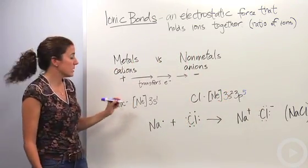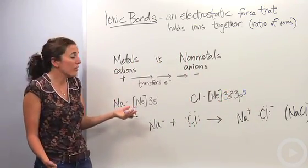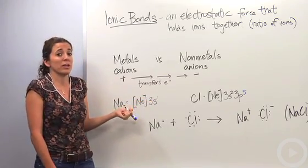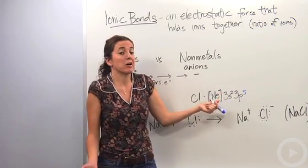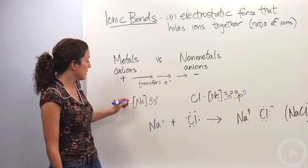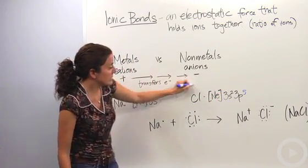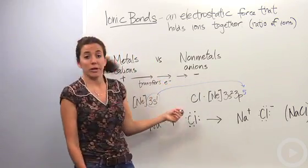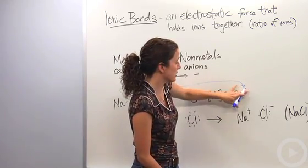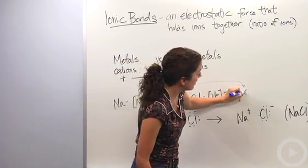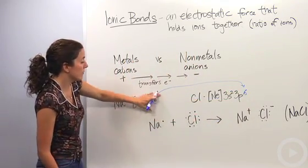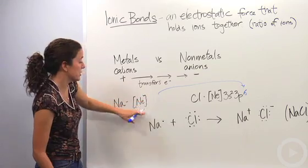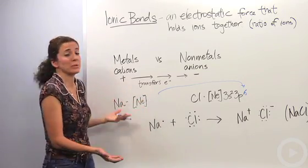So what happens is sodium is going to say, okay, well I'd rather give up this electron so I can have the stable configuration of Neon. And chlorine is like, well I would like to get one so I can have the stable configuration of Argon. So sodium is going to be super nice and give up its electron to chlorine. Chlorine is then going to have a configuration of 3p6, which is great because it's a configuration of argon, very stable. And sodium is going to get rid of this and it's going to have the configuration of Neon, again very stable, so everybody's really happy.